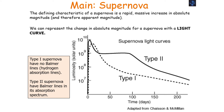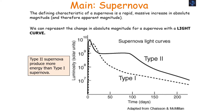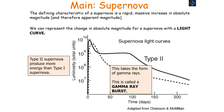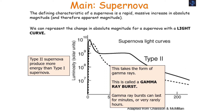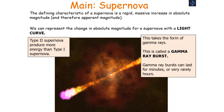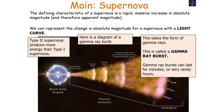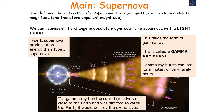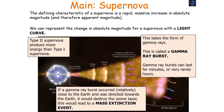All type 1a supernovae show the same peak absolute magnitude of minus 20, making them useful as standard candles. Type 1 supernovae have no Balmer lines — no hydrogen absorption lines — but type 2 supernovae will have Balmer lines in their absorption spectrum. Type 2 supernovae produce more energy than type 1 supernovae, and this energy takes the form of gamma rays — we call it a gamma ray burst. Gamma ray bursts can last for minutes or very rarely even hours. If a gamma ray burst occurred close to the Earth and was directed towards it, it would destroy the ozone layer, leading to a mass extinction event.